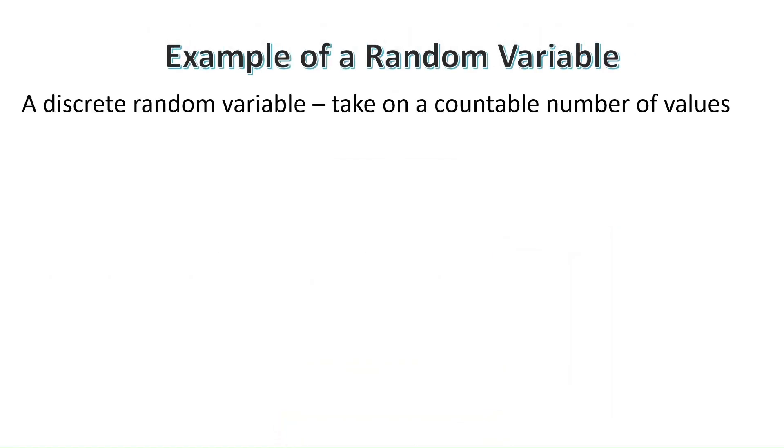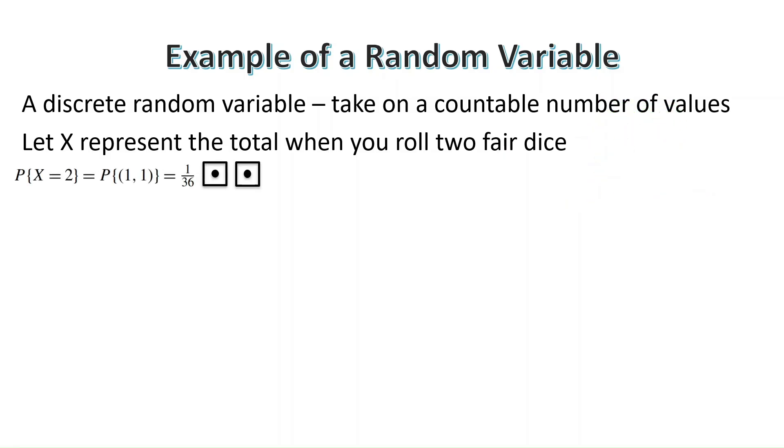A discrete random variable is something that can take on a countable number of values. So let X represent the total when you roll two fair dice. The smallest possible value x can take on is 2. The only combination that can give you that is if you roll a 1 and a 1 at the same time. So x, the random variable, is equal to 1 plus 1. The probability of getting that combination is 1 over 36. The sample space is 36 because all possible outcomes you have is 6 for the first dice and 6 for the second, and then 6 times 6 is 36.